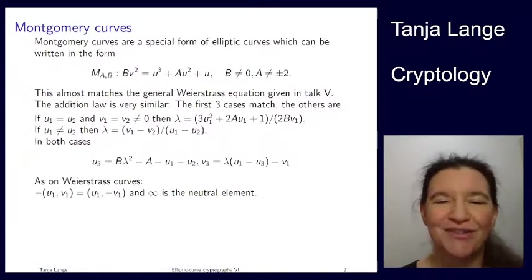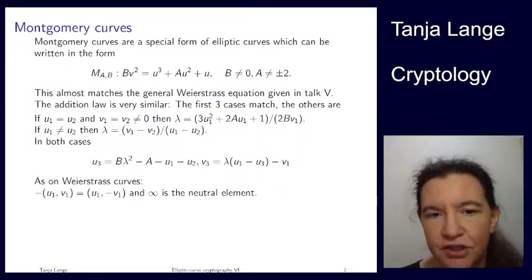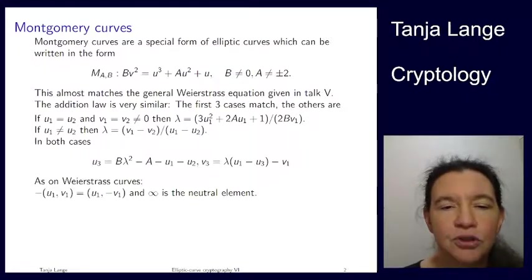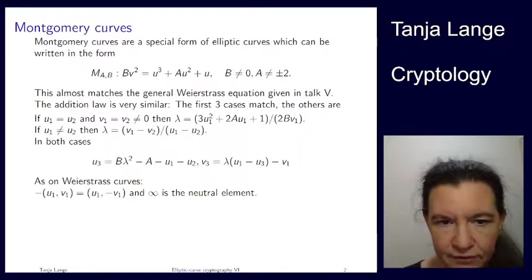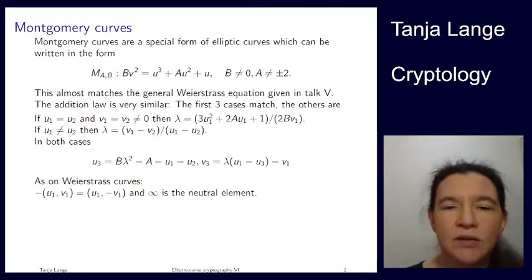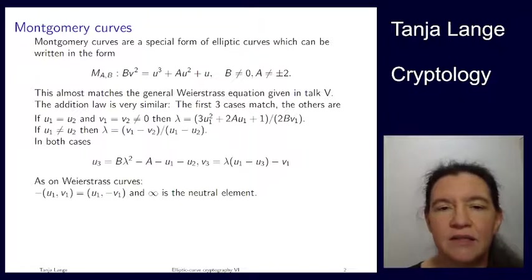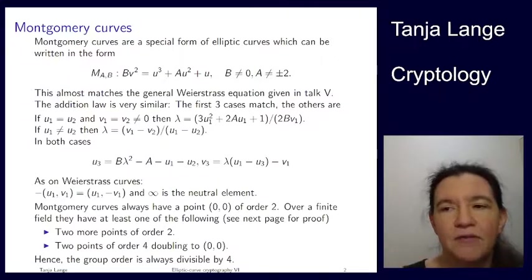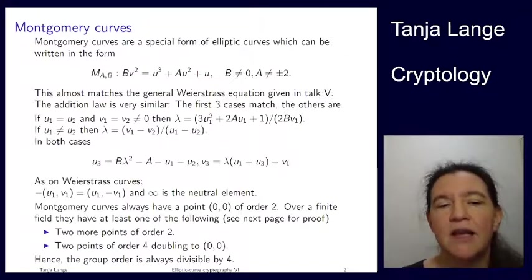Watch out when computing on Montgomery curves that the addition law is slightly different from what you're used to on the Weierstrass curve. If you look at textbooks, you often find Weierstrass curves; you seldomly find Montgomery and Edwards curves. So when using those addition formulas, make sure to notice the slight differences. Now let's take a look at this curve — it's symmetric with respect to the u-axis. For pictures we always have the reals in mind, but for cryptography we always use finite fields, so we are interested in what happens on finite fields.